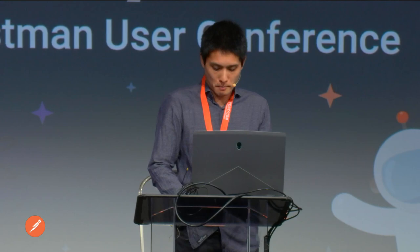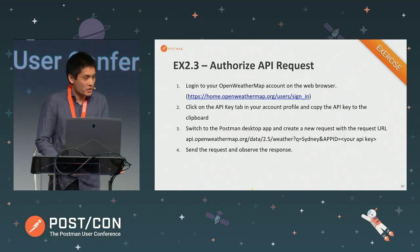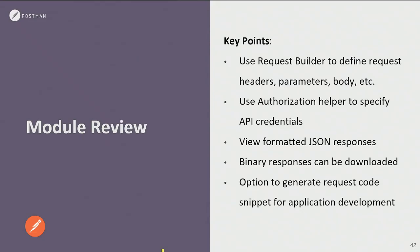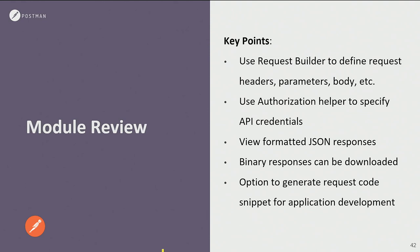So that was authorizing our API requests, and that's the module for creating and sending requests. We've looked at using the request builder to define our request along with headers, parameters, and request body. We've seen the authorization helper and how it helps specify API credentials, seen formatted JSON responses, and how to generate code snippets. Now let's put those requests into collections.